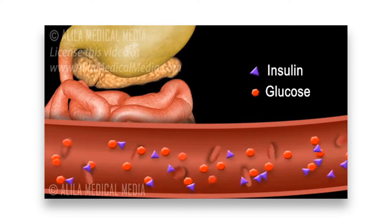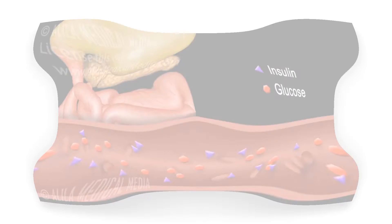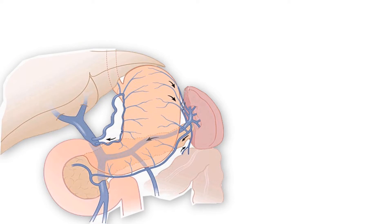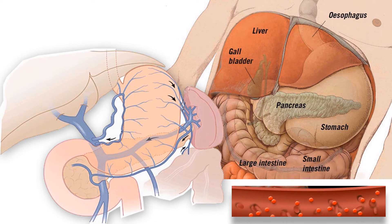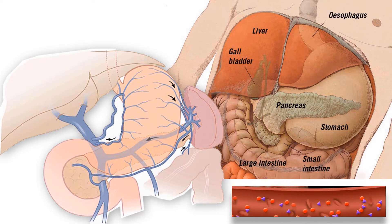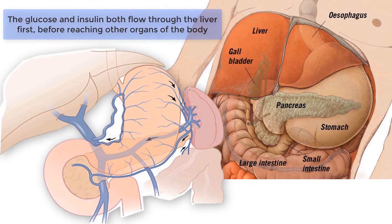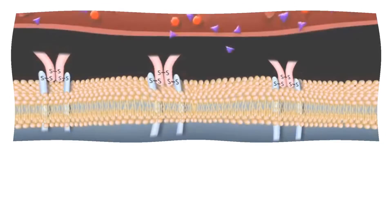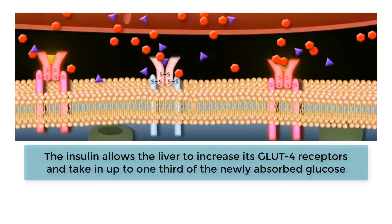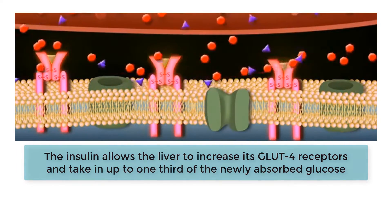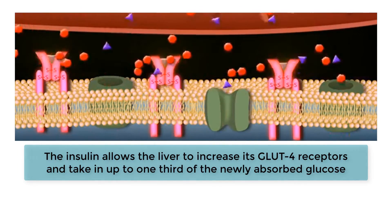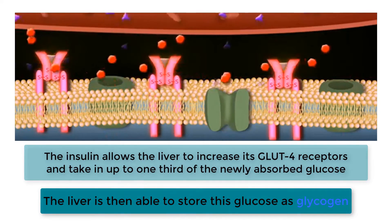To review from our video on the hepatic portal circulation, all blood from the veins of the digestive tract passes through the liver before going on to the rest of the body. This means that as glucose enters the blood from the intestines, simultaneously insulin enters the blood from the pancreas. The glucose and insulin both flow through the liver first, before reaching the other organs of the body. The insulin allows the liver to increase its GLUT4 receptors and take in up to one-third of the newly absorbed glucose.